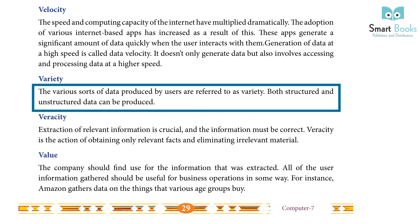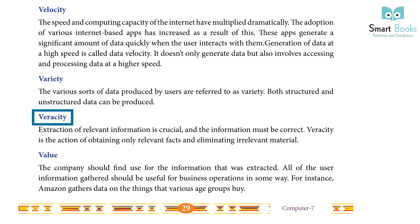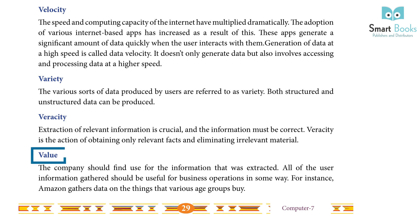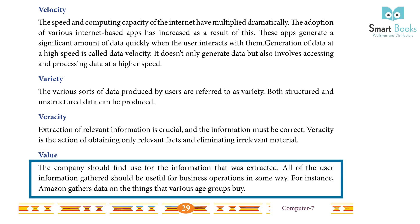Variety: The various sorts of data produced by users are referred to as variety. Both structured and unstructured data can be produced. Veracity: Extraction of relevant information is crucial and the information must be correct. Veracity is the action of obtaining only relevant facts and eliminating irrelevant material. Value: The company should find use for the information extracted. All user information gathered should be useful for business operations in some way — for instance, Amazon gathers data on the things that various age groups buy.